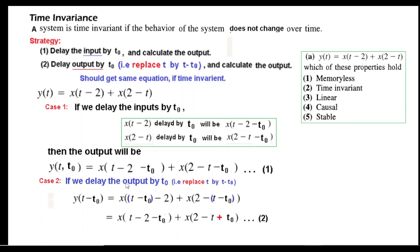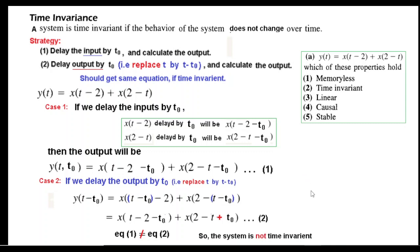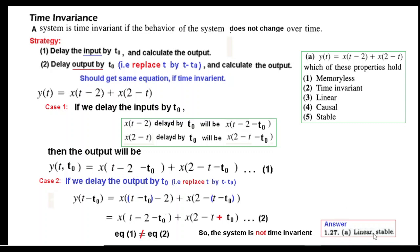In Case 2, we delay the output by replacing t with t-t0 in the output equation, giving a second equation. Comparing the two equations, they are not the same because one term has a minus sign while the other has a plus sign. Since they differ, the system is not time invariant — it varies with time — which is why time invariance is absent from the solution manual answer.